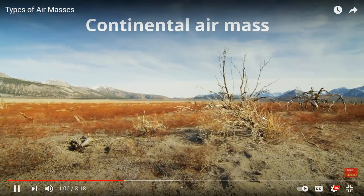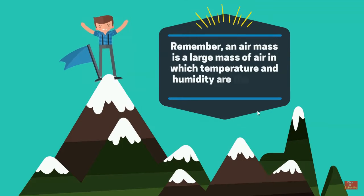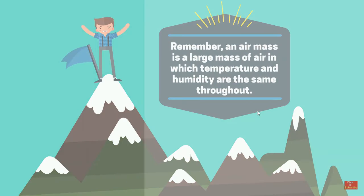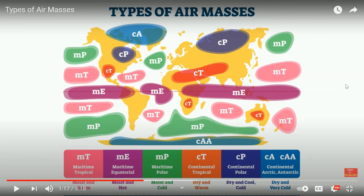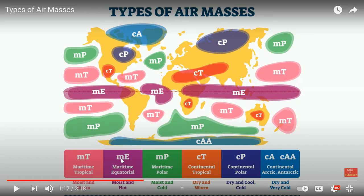Remember, an air mass is a large mass of air in which temperature and humidity are the same throughout. Let's take a look at many of the air masses found on earth. They have abbreviations at the bottom. The ones to focus on are maritime tropical (MT), maritime polar (MP), continental tropical (CT), and continental polar (CP). We will also review continental Arctic as CA instead of CAA. Maritime equatorial forms only right on the equator.